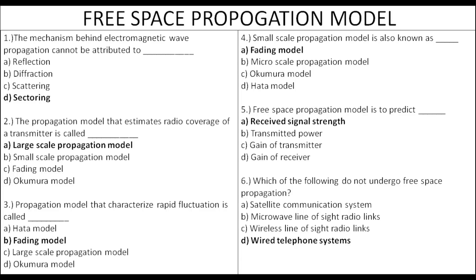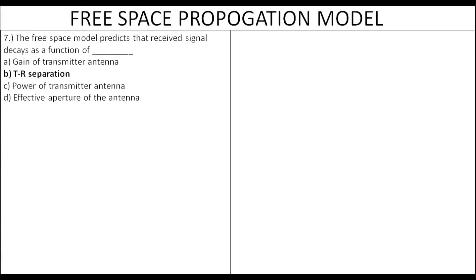But wired telephone systems are not included. Next, the free space propagation model predicts that the received signal decays with TR separation distance. This is the ideal TR separation environment.